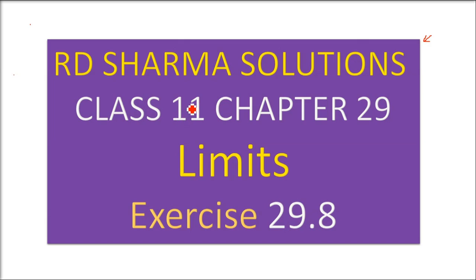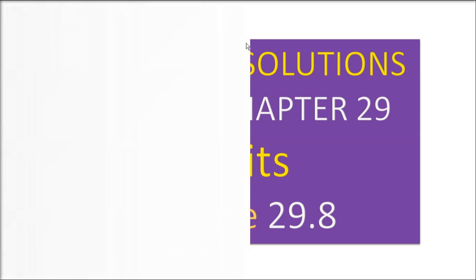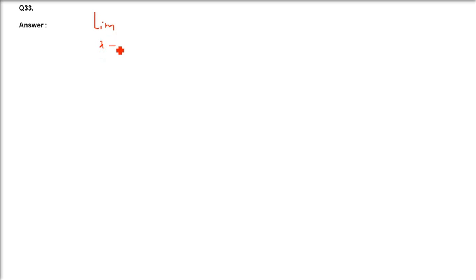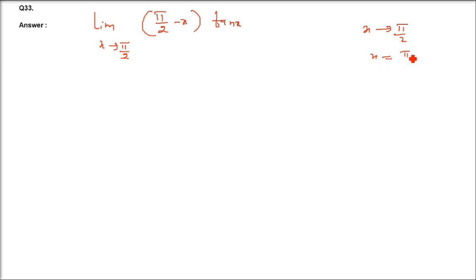This is R.D. Sharma Solutions Class 11, Chapter 29, Limits, Exercise 29.8. Question number 33: limit x tends to π/2 of (π/2 - x)·tan(x). Since x is tending to π/2, we take x as π/2 - h, so when x tends to π/2, h tends to 0.